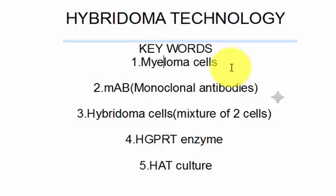That's why the name is monoclonal, as it is derived from a single clone of cells. For example, some plasma cells are identical in structure. But in case of polyclonal antibodies, the polyclonal cells are produced by different types of plasma cells. In monoclonal antibodies, as the plasma cells are identical, the antibodies bind to the specific epitope.